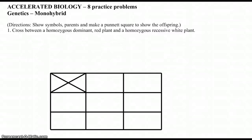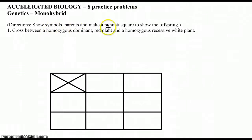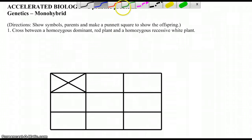We're going to do some more practice monohybrid crosses. You should have a worksheet with eight practice problems on it, and we're going to work through these. Make sure you read the directions. In this case, we're going to show our symbols, write our parents, fill out our Punnett square, and we're also going to look at phenotypic and genotypic ratios.